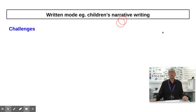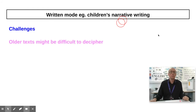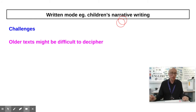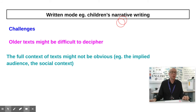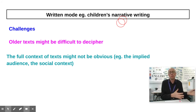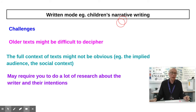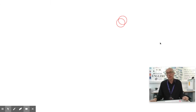Now some challenges of written mode investigations: older texts can be quite difficult to decipher, particularly if you go back to 17th-century texts where the graphological lettering features differ from today. The full context of a text might not be obvious, so going into the past limits what you know about the implied audience and social context. A written text may therefore require quite a lot of research about the writer and their intentions.